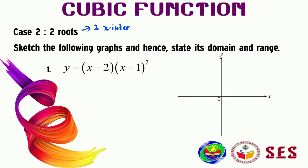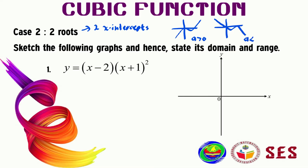We have two basic shapes for case two. When a cubic function has two roots, it only passes through the x-axis at two points — it can be like this, or it can be like this. This first shape occurs when the coefficient of x³ is greater than zero, and the second shape occurs when the coefficient of x³ is less than zero.